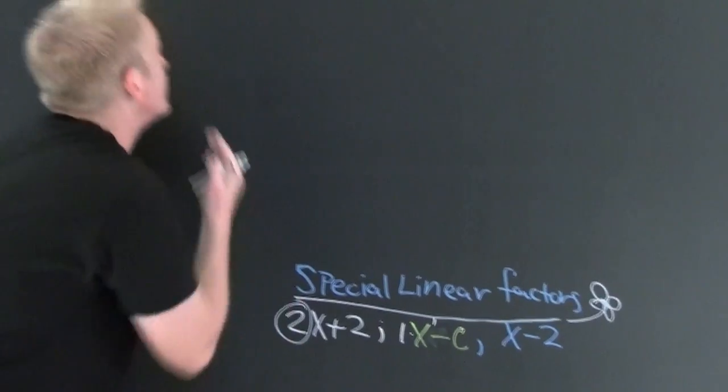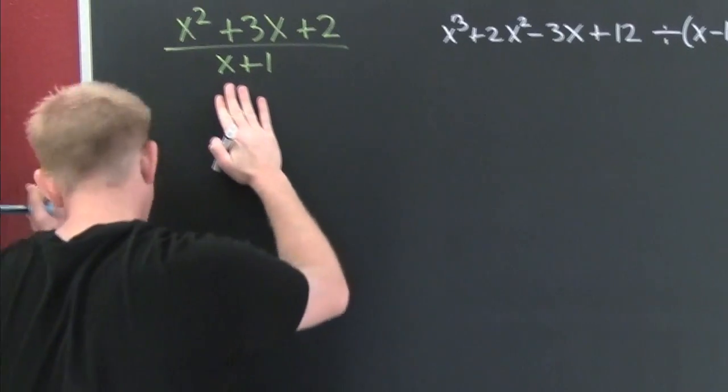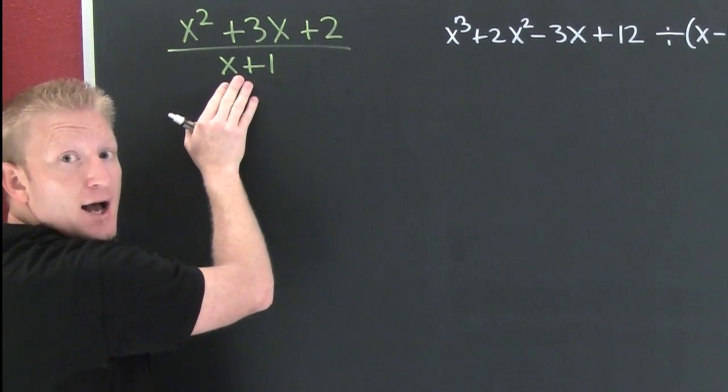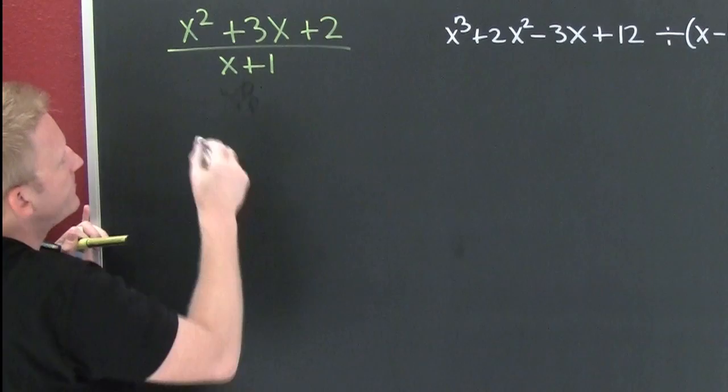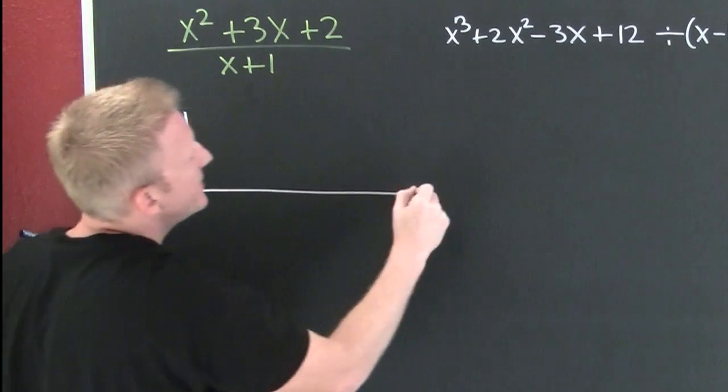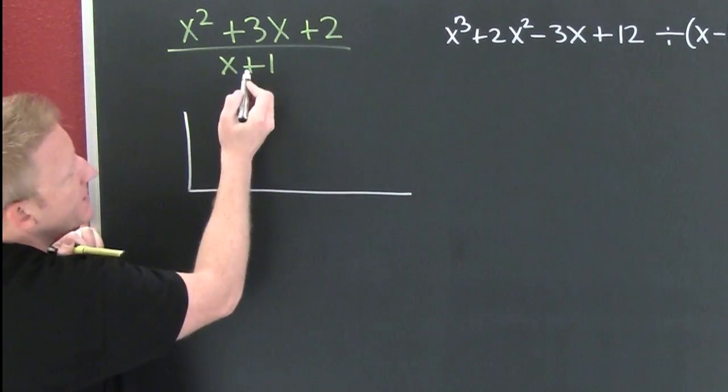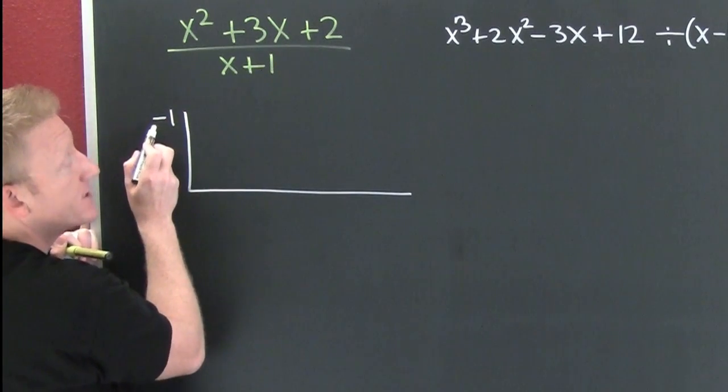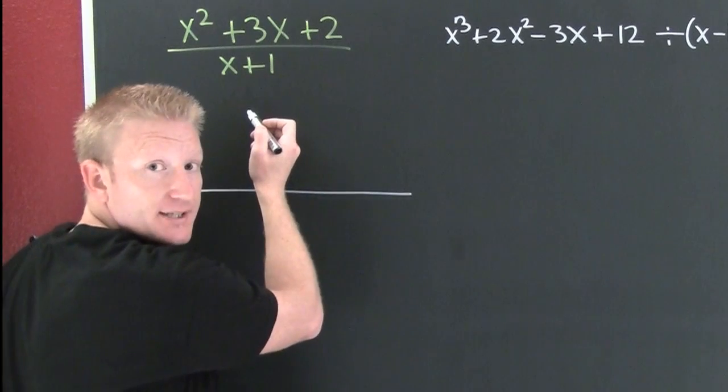I'm ready for an example. Up here. Am I dividing by a special linear factor? I am. Zeros go outside of the box. What makes that denominator 0? Minus 1. Zeros go on the outside. Coefficients go on the inside.